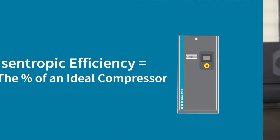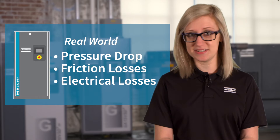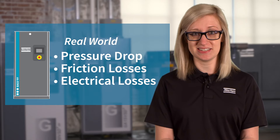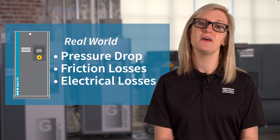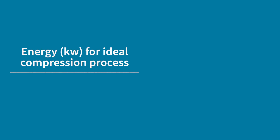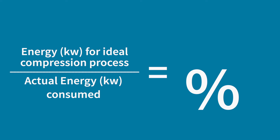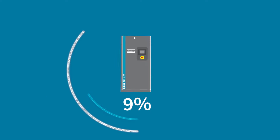Isentropic efficiency is stated as a percent of an ideal compressor, but keep in mind that an ideal compressor doesn't exist because of things like pressure drop, friction losses, and electrical losses. It's a simple ratio: your energy for the ideal compression process divided by your actual energy consumed.